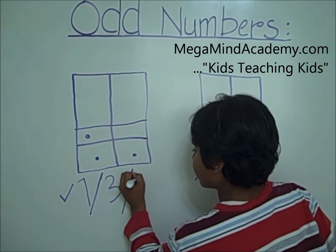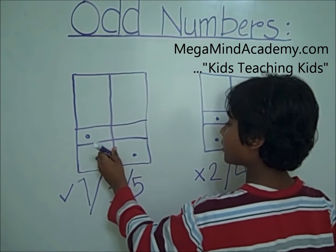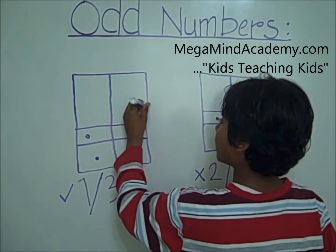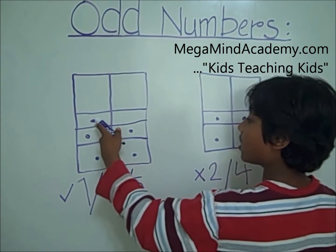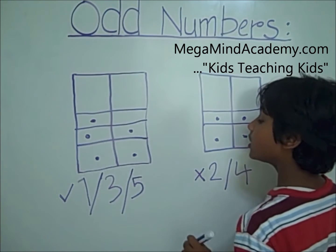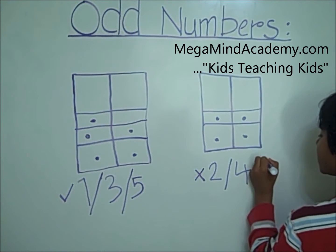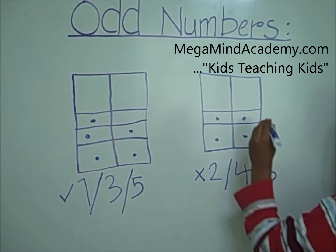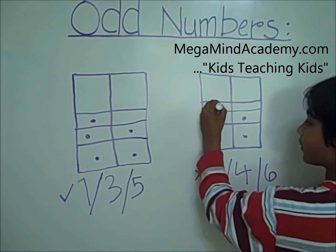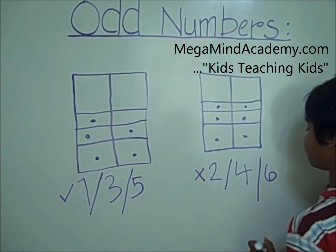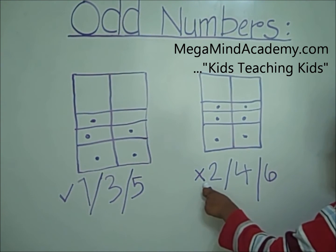Let's go to five. We draw five dots: one, two, three, four, and five. Five does not have a pair, so five is an odd number. Let's go to six. We draw six dots: one, two, three, four, five, and six. Six has a pair, so it's not an odd number.